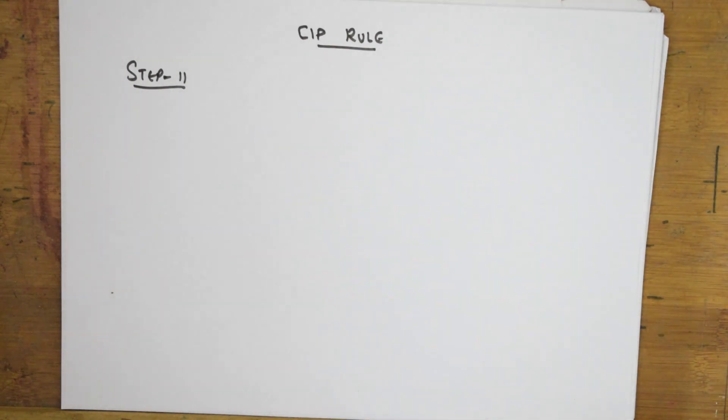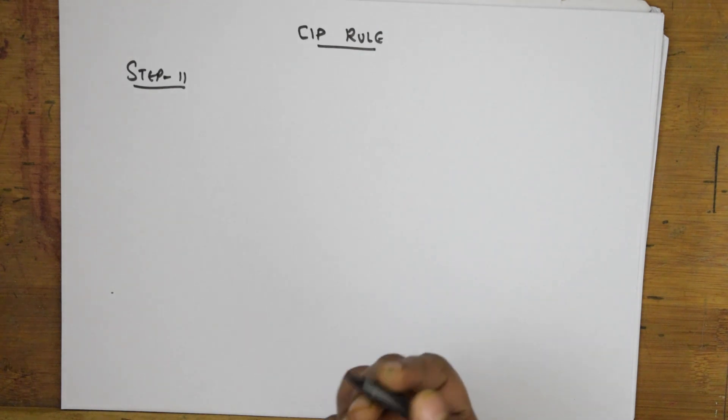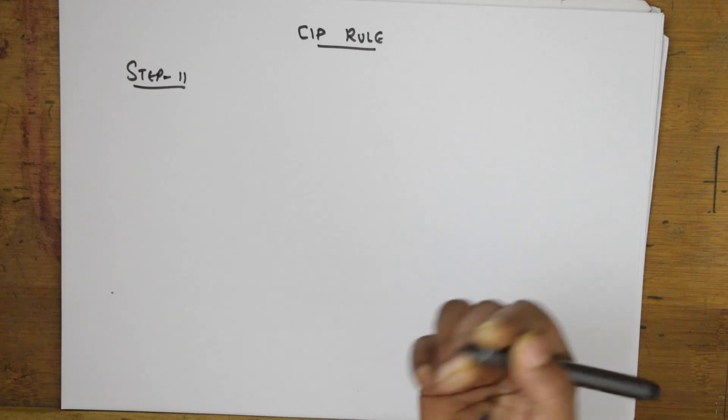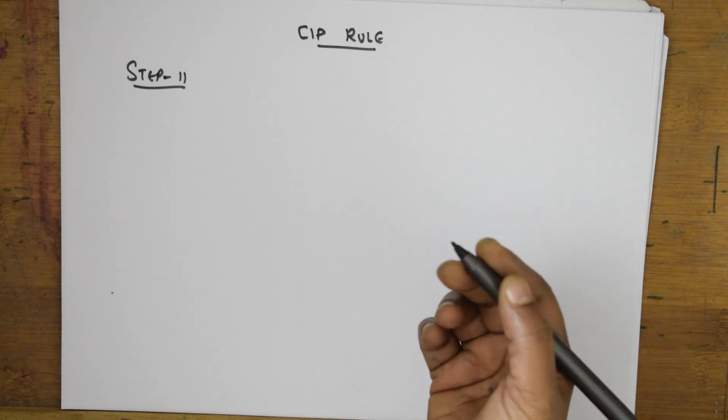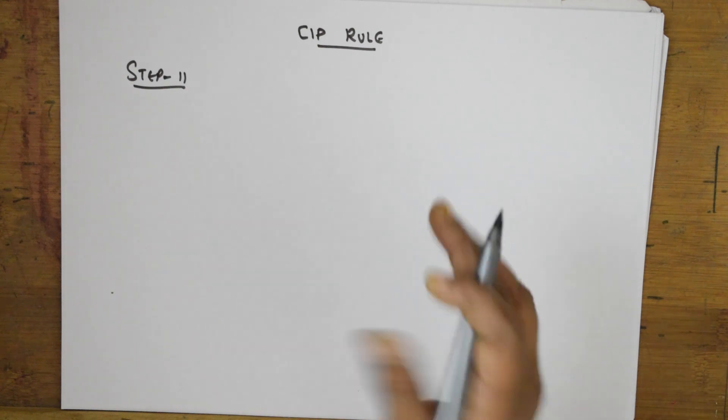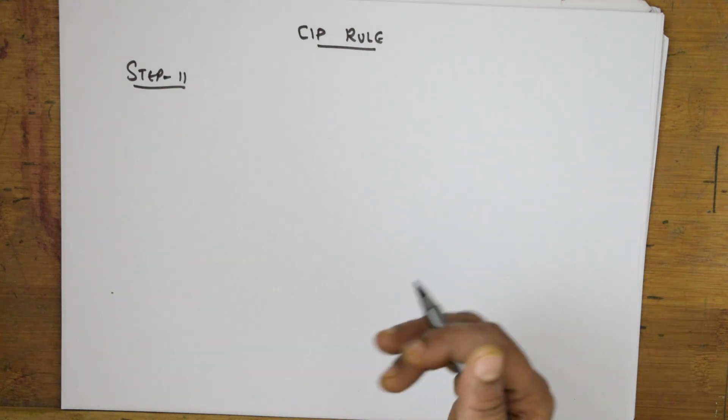Now today in this video, we'll be seeing step 2 and step 3. I'll also teach you how to deal with different examples when they ask you to write the R and S nomenclature. But now, I'll just give you step 1, step 2, and step 3.